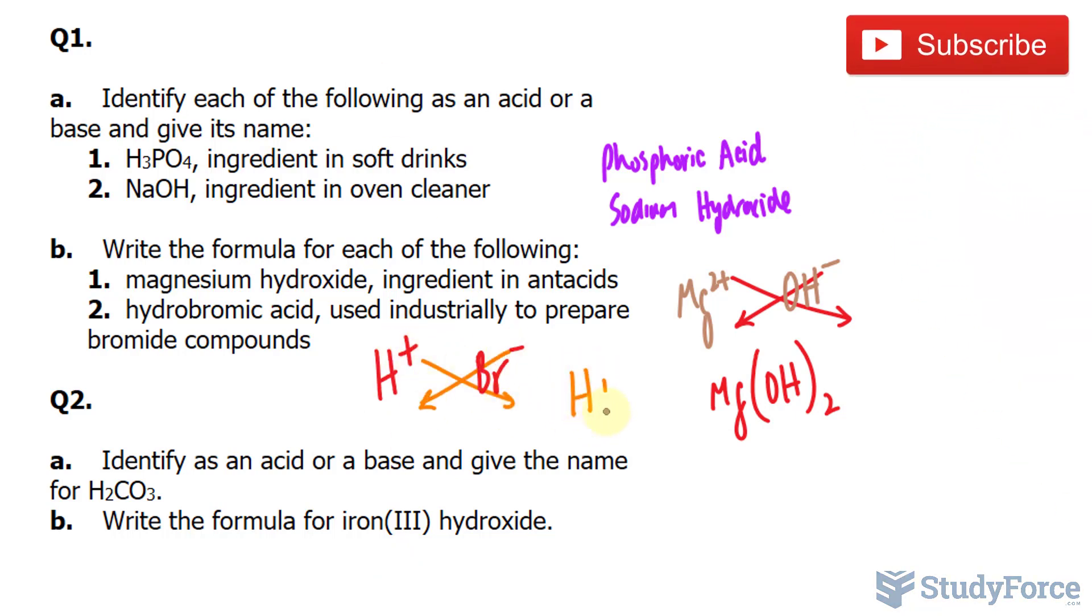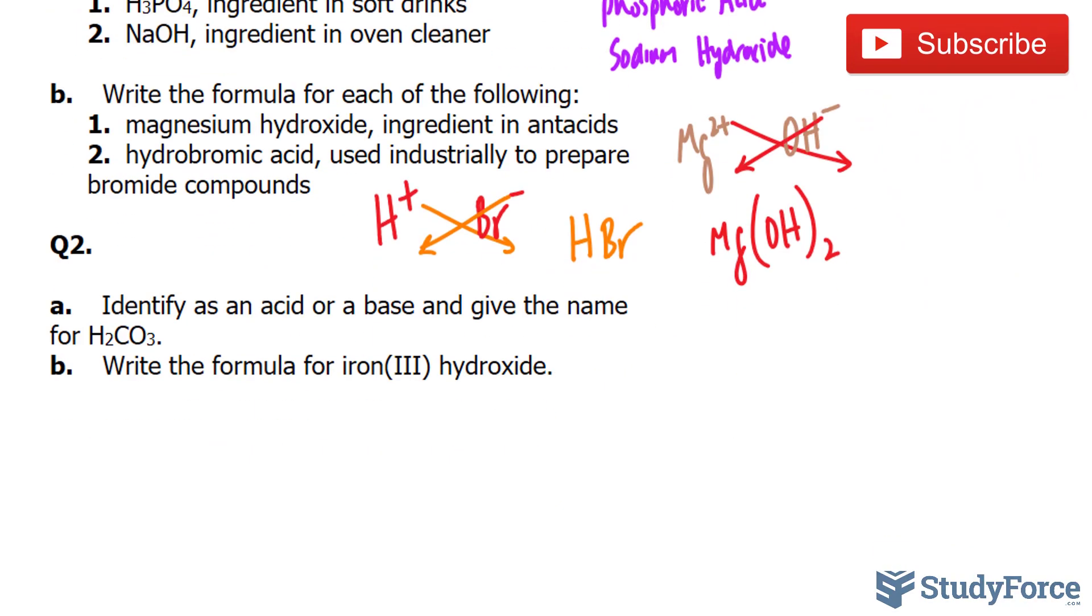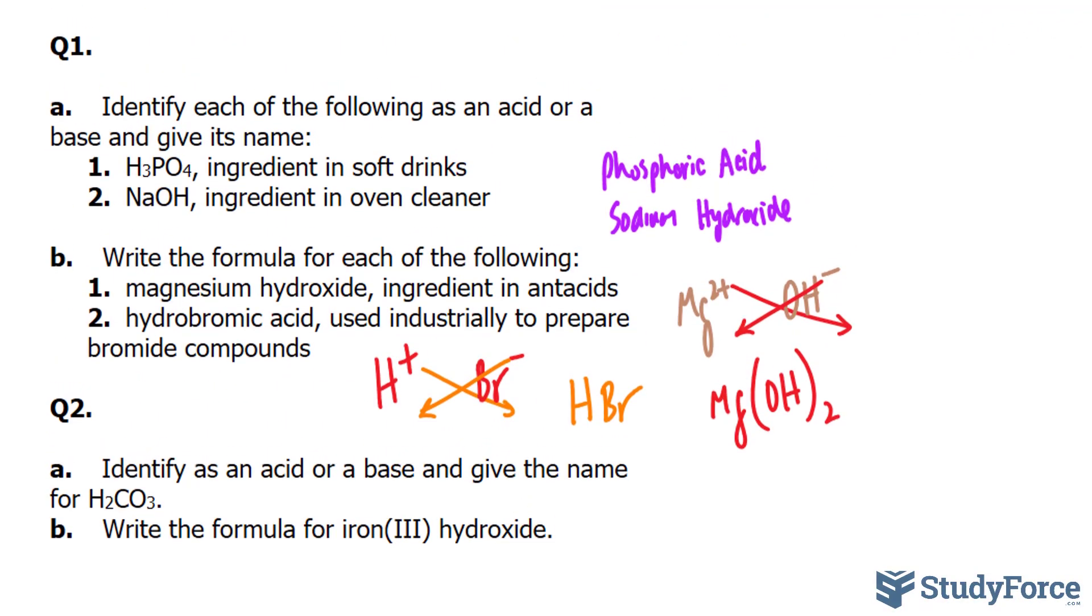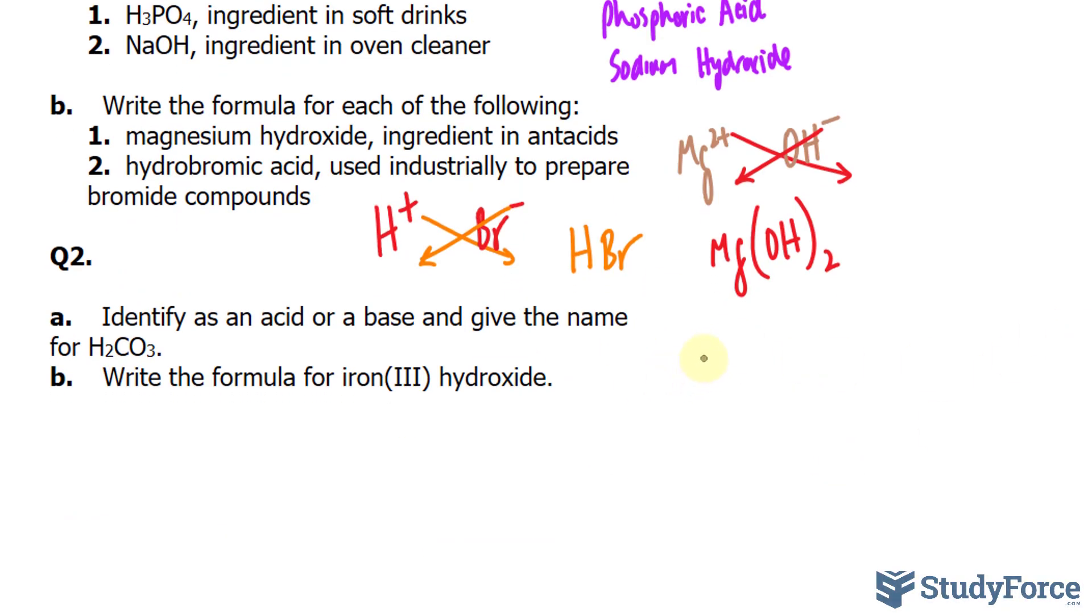In question 2, identify as an acid or a base and give the name of H2CO3. This is very similar to the first example. We have carbonate, the polyatomic ion, coupled with two hydrogens. So we can write down carbonic acid. Usually, the hydrogens are indicative that it is an acid.